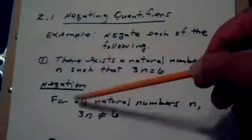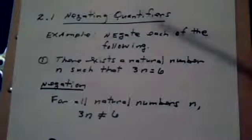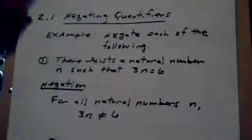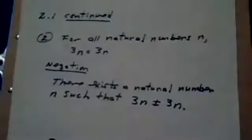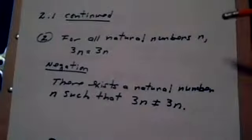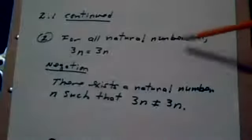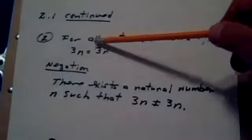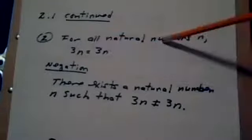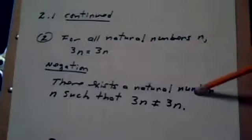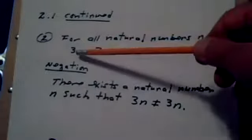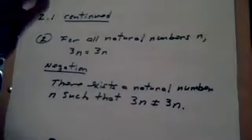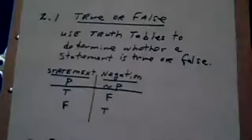Here's another example. For all natural numbers n, 3n=3n. So what would be the negation of 'all natural numbers'? There exists a natural number. What's the negation of 3n=3n? 3n≠3n.